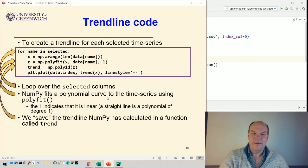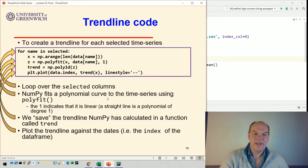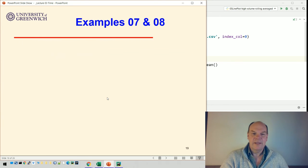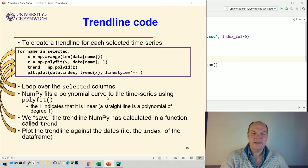We can then save the trend in this function that we've calculated, and then we apply this trend against the date. So we take the trend of those x values, which are the values that NumPy's calculated, and plot them using this function called trend. Okay, I think I'm going to stop there and we'll see some more examples, but that's standard code for doing a linear regression or a trendline in our examples.